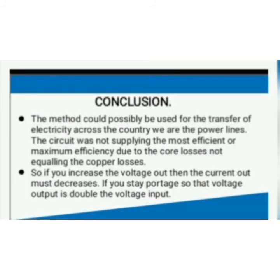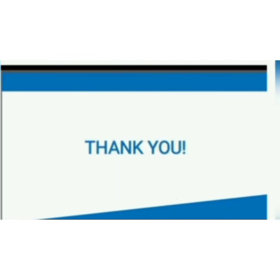Here we see the conclusion. The metal could possibly be used to transform electricity across the country via power lines. The circuit was not supplying maximum efficiency due to core losses not being minimized. So if you increase the voltage out, then current out must decrease. If you step it up so that voltage output is double the voltage input — thank you.